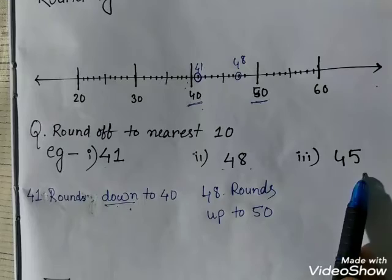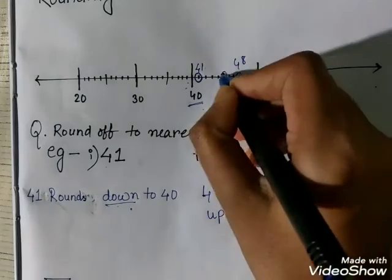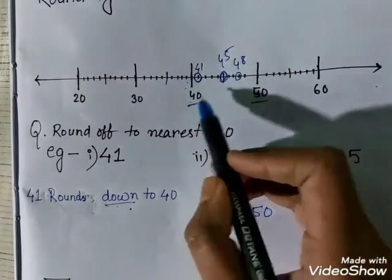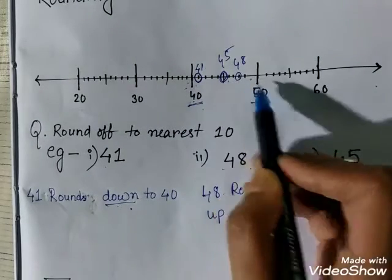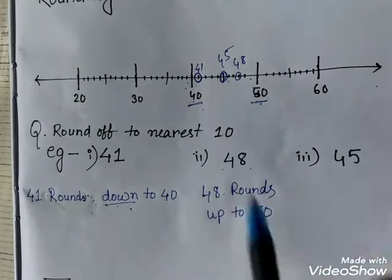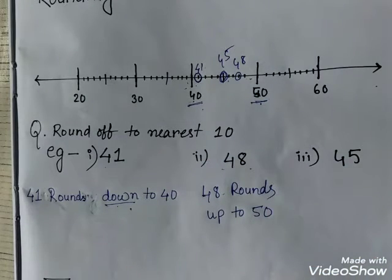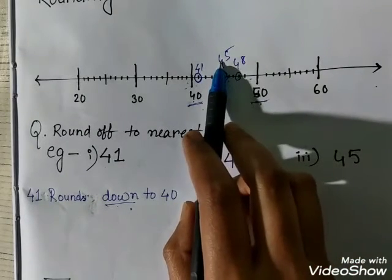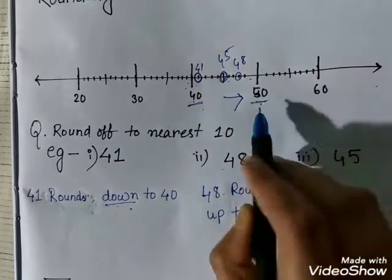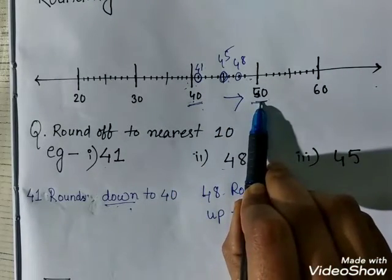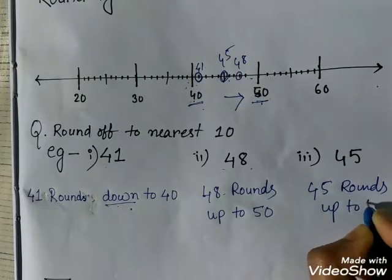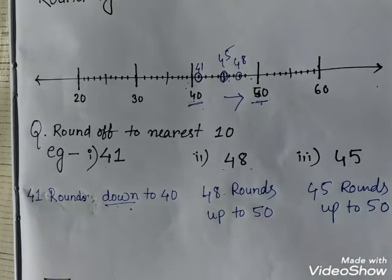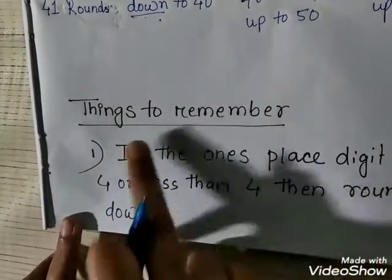Now the question is: what if the number is exactly in the middle? For example, 45. The point 45 is equidistant — it is equally near to both 40 and 50. In this case, the rule is that it also rounds up. So we write: 45 rounds up to 50. Remember this rule.